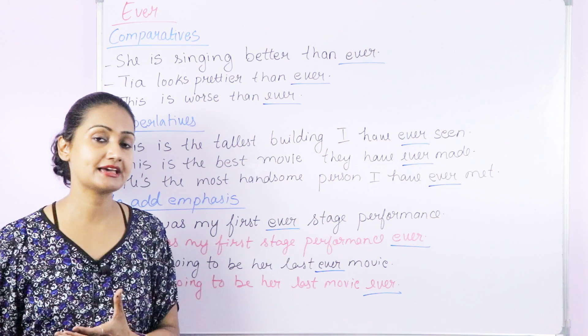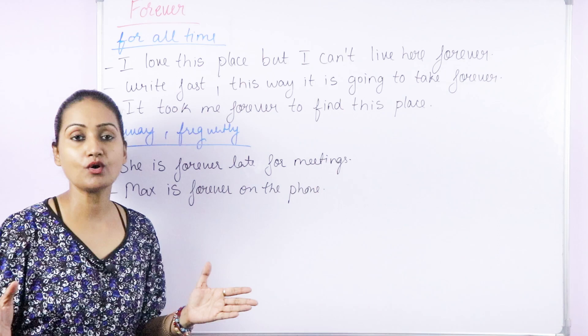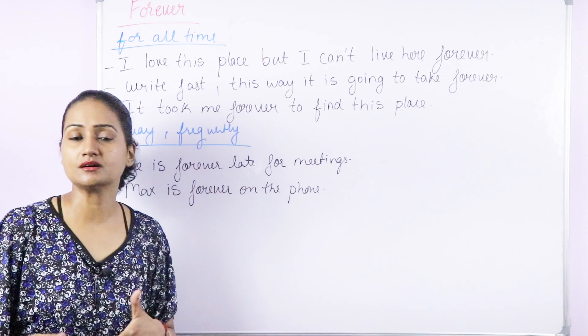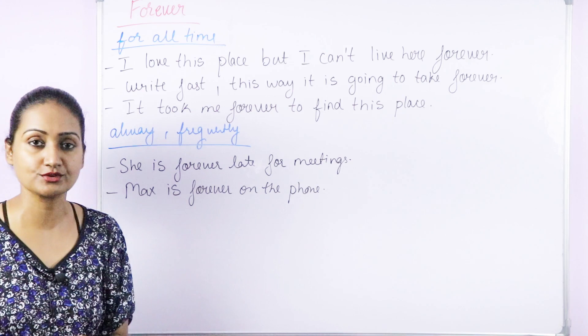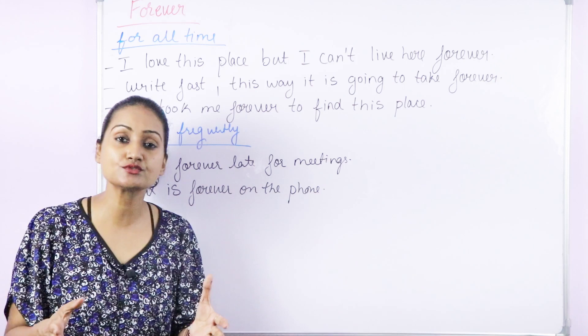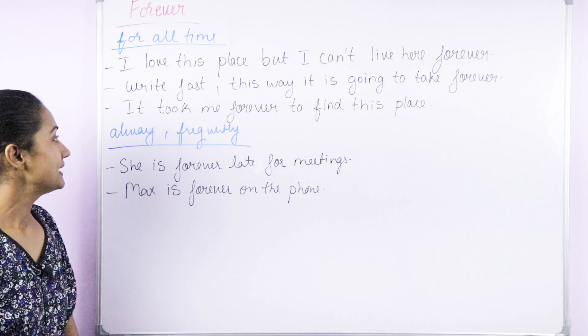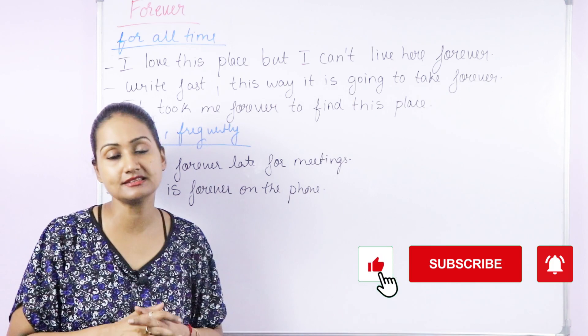Now let's move on to forever, which has two meanings. The first meaning is for all time or for a long time. For example: I love this place but I can't live here forever — I can live here for a week or a month, but not for all time. Write fast — this way it is going to take forever. We have to finish this work by evening; the way you're doing it, it is going to take a long time. It took me forever to find this place — it took me a long time.